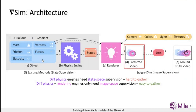This predicted video sequence is compared with a true video, and the loss is backpropagated through the entire system, that is the rendering and physics engines, because they are differentiable.